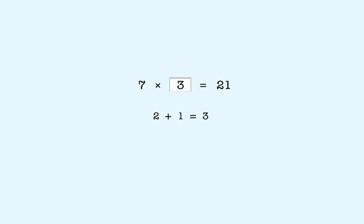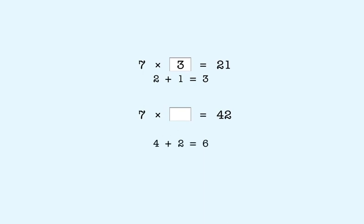Here's a similar one. 7 times an unknown number equals 42. To find the answer, we add the digits in the product, which is 42. That means the missing factor is 6.